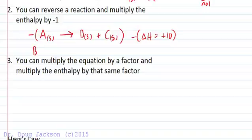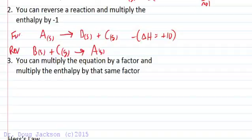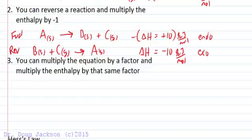What we end up with is reversing products and reactants: B plus C as a gas yields A. We've got the reverse reaction. Our delta H then gets multiplied by negative 1 and now we have negative 10. This is an exothermic process whereas the forward reaction is endothermic.